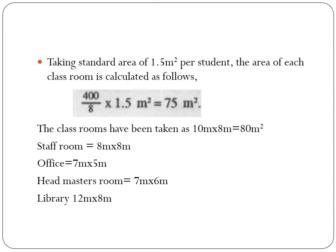Since the strength of students is 400, we take a standard area of 1.5 square meters per student. Area of each classroom is calculated as 400 divided by 8, multiplied by 1.5, giving 75 square meters. We round this up to 80 square meters, taken as 10 meters by 8 meters. We require 75 square meters on the higher side, so we take 80 square meters.